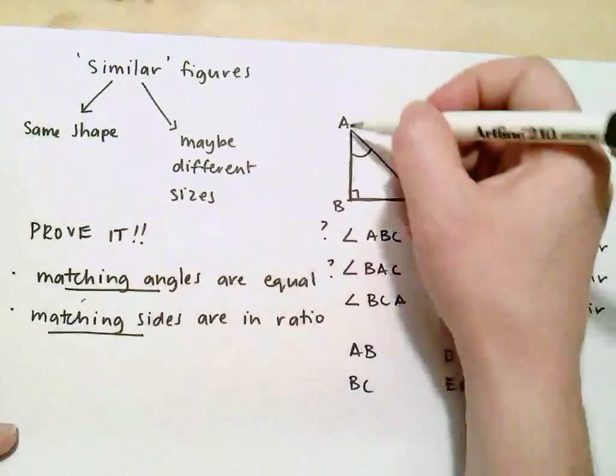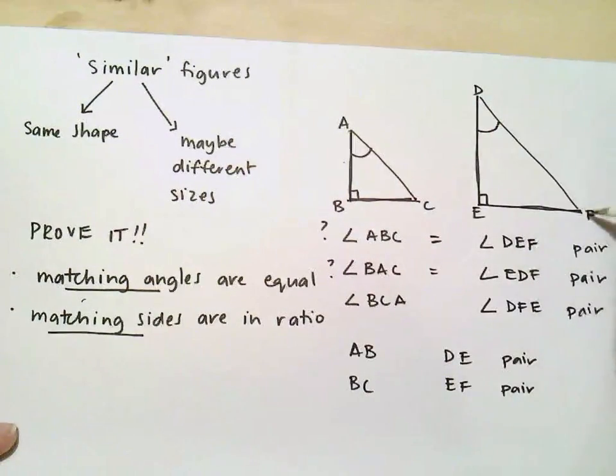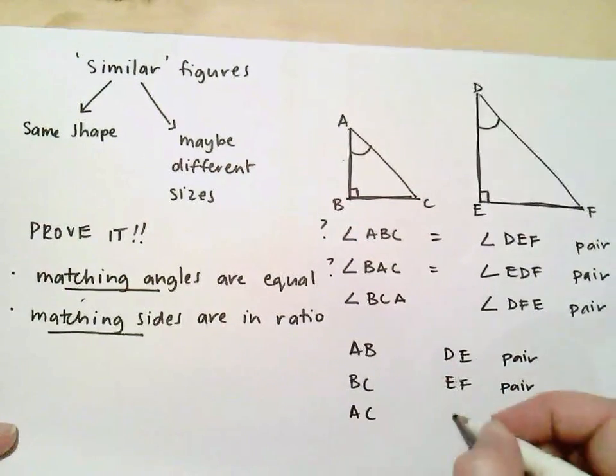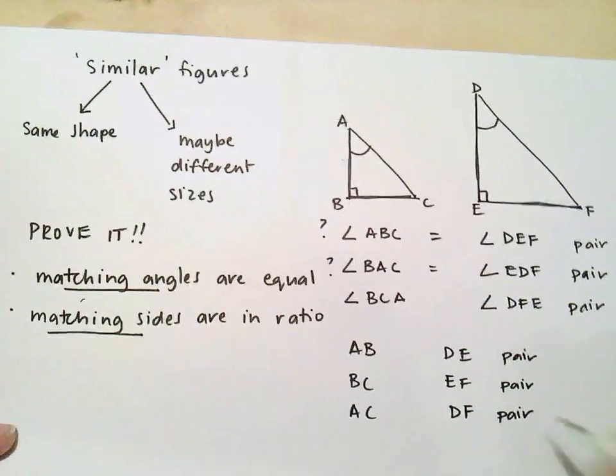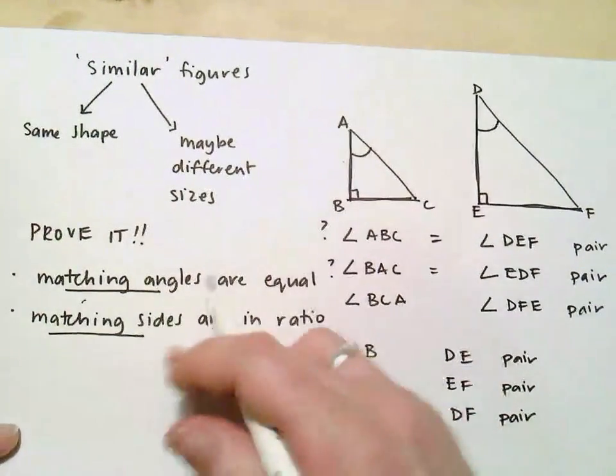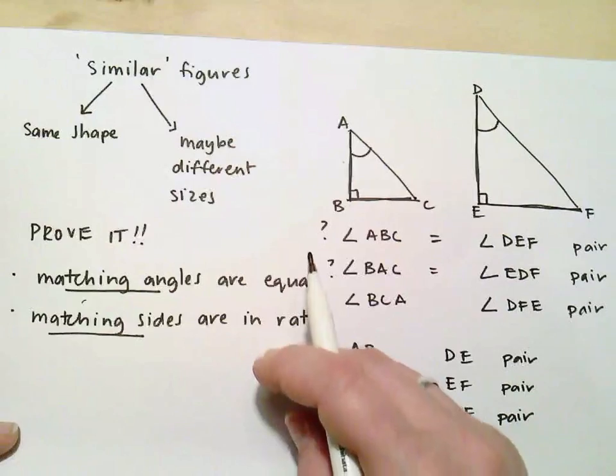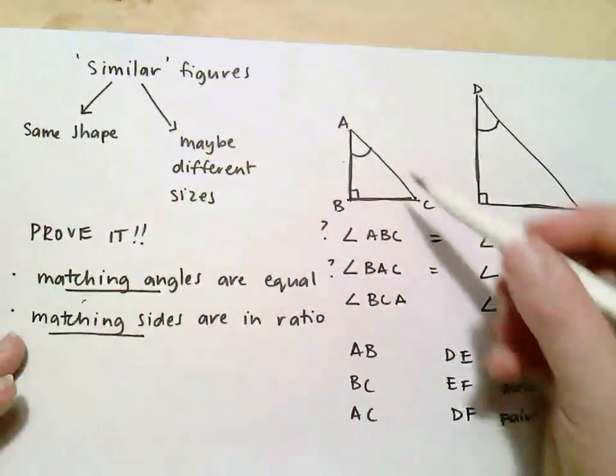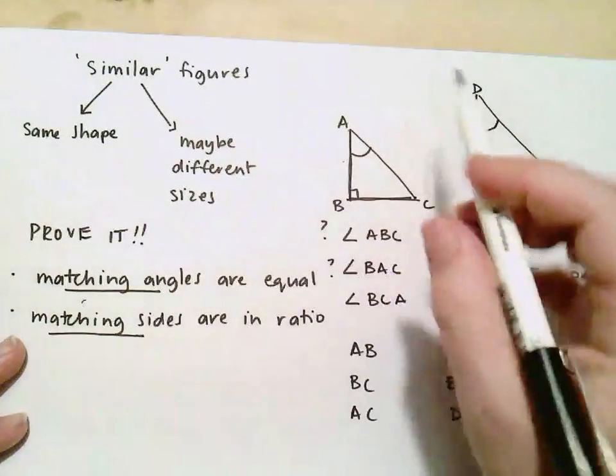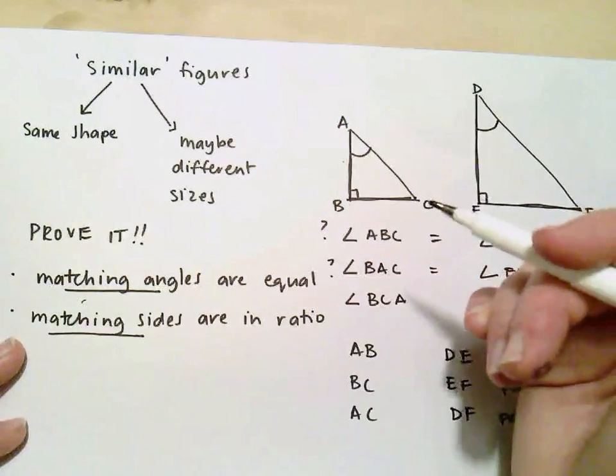I'd say that side BC and EF are a pair. And I'd say that side AC and side DF, they're a pair. So I've got to be able to show whether they are in ratio. And I'll explain what that means in a moment. So that's the first thing. You've got to be able to identify the matching angles and the matching sides.